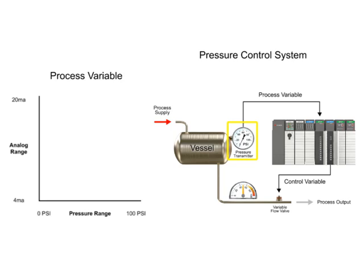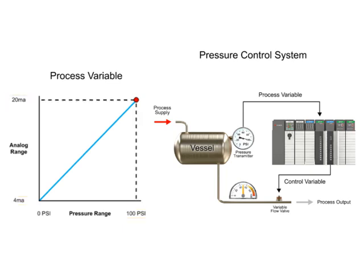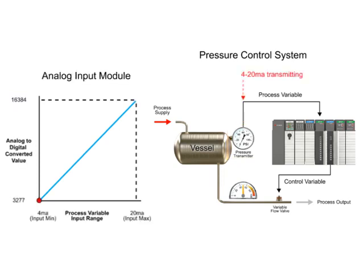The pressure transmitter, identified as the process variable, converts 0 to 100 PSI to a 4 to 20 milliamp signal. With a linear relationship, 0 PSI measured at the transmitter produces a 4 milliamp signal, and at 100 PSI a 20 milliamp signal is produced. The analog input module converts the 4 to 20 milliamp signal to a digital value ranging from 3,277 to 16,384. A 4 milliamp signal results in a value of 3,277 and a 20 milliamp signal results in a value of 16,384.